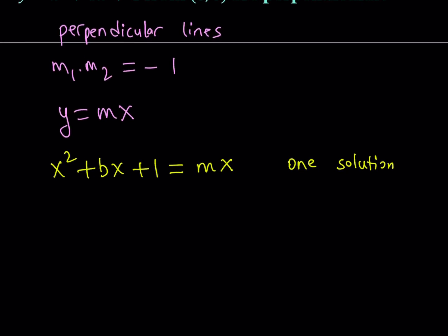Now let's go ahead and put everything on the same side. We can turn this into a quadratic equation. And I want this equation, this quadratic, to have a single solution. What is that supposed to mean? It means that this is a perfect square. You can look at it that way, or you can look at the discriminant. So let's go ahead and look at the discriminant for this equation.